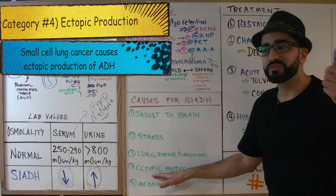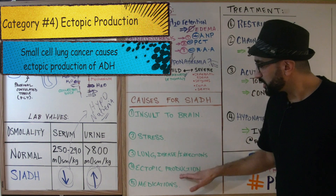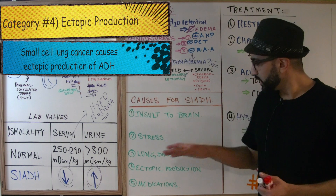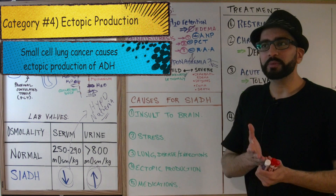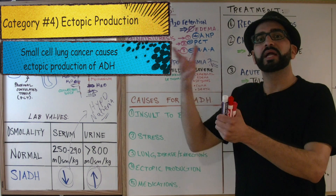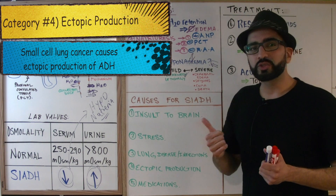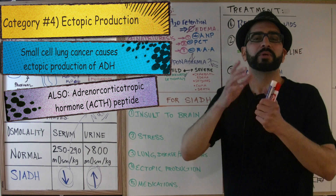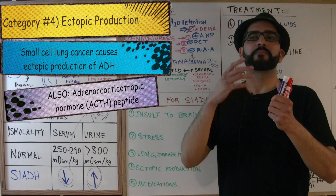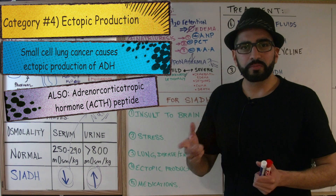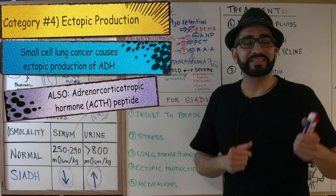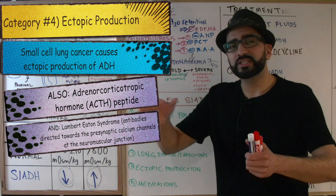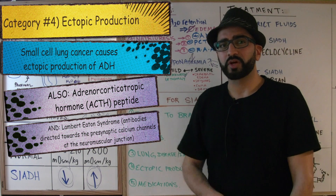The fourth category — one you'll keep seeing on board exams — is ectopic production of ADH. Small cell lung cancer specifically causes excess ADH production. Ectopic means a peptide or hormone is produced where it normally shouldn't be. As a side note, small cell lung cancer also produces ectopic ACTH and generates antibodies against presynaptic calcium channels at the neuromuscular junction, resulting in Lambert-Eaton syndrome.